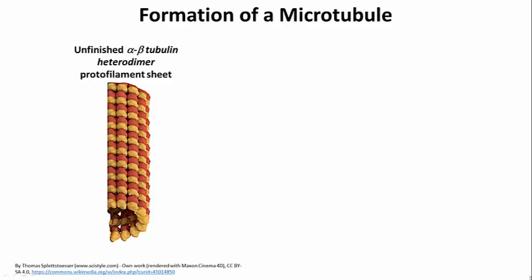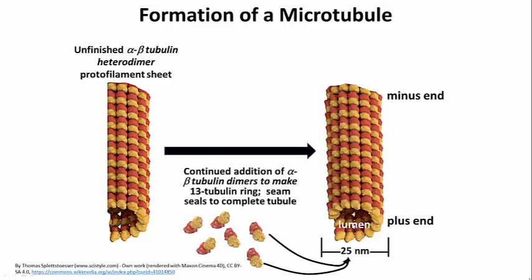Let's take a look at a single microtubule. Alpha-beta heterodimers will add to each other to form a flat sheet called a protofilament. When it gets long enough and wide enough, that sheet will curl — and that's what you're seeing here. Eventually a seam will form and you will get an actual tubule.